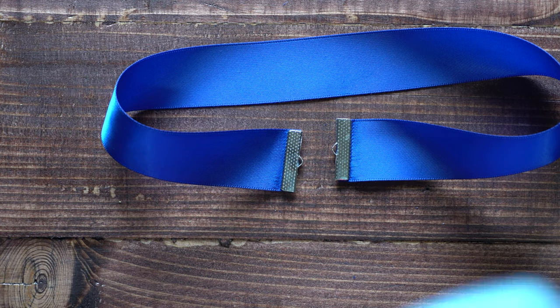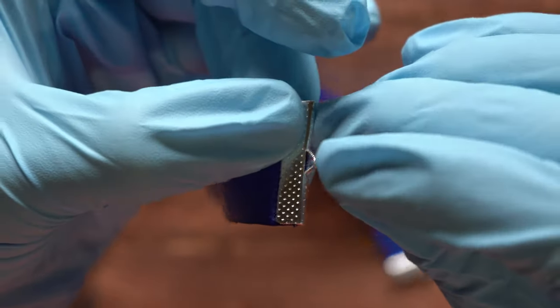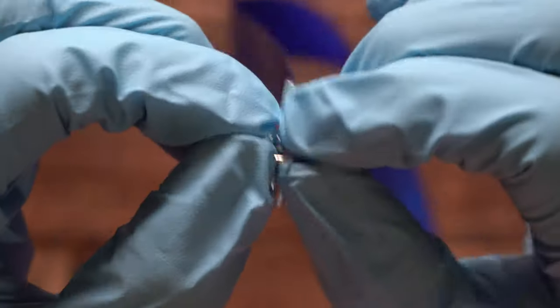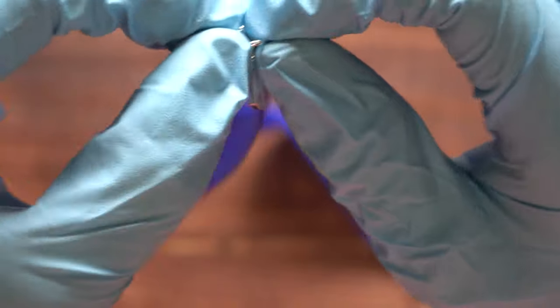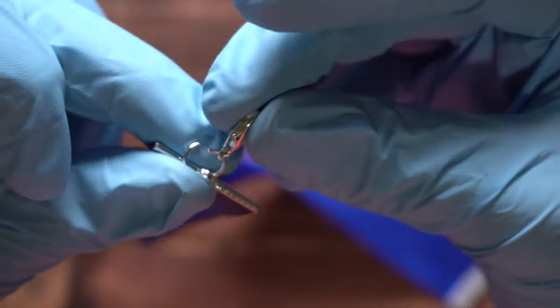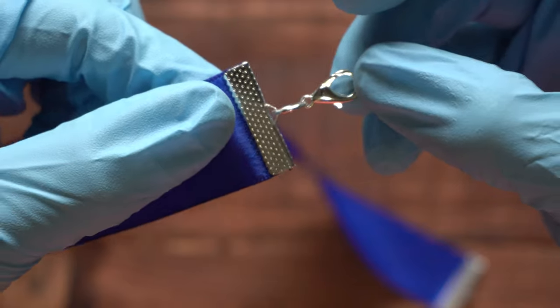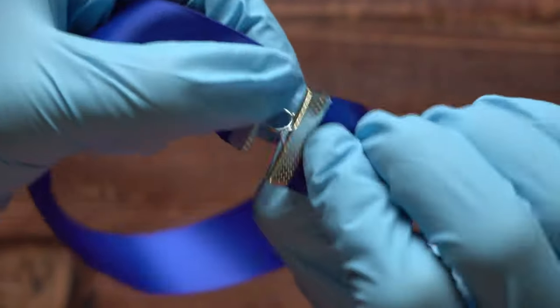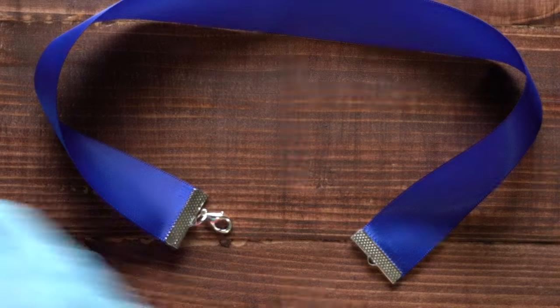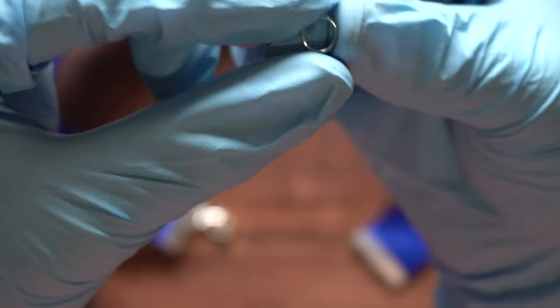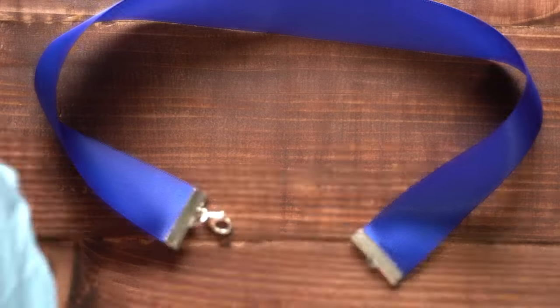Once the end pieces are on, you can go ahead and add a clip. The kit also comes with chains like this one to make the necklace longer if you'd like.